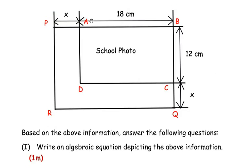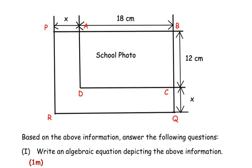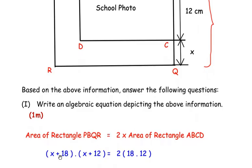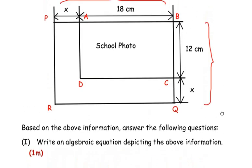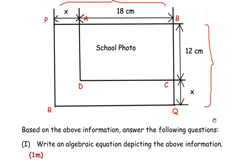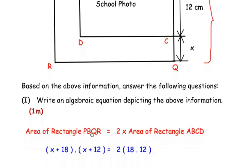The length of the larger rectangle is extended, so the total length is x plus 18 and the width is x plus 12. So the area of the larger rectangle is (x + 18)(x + 12), and this equals 2 times the area of rectangle ABCD, which is 2 × 18 × 12. This is the answer for the first question. You can multiply it out or keep it in this form.